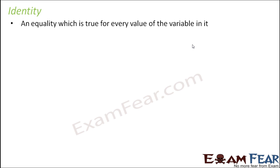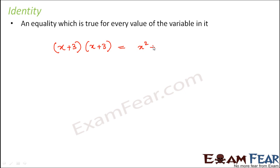Now what is an identity? An identity is also an equality which is true for every value of the variable in it. The equation we just saw was true only for x equal to 3, but an identity is the type of equality which is true for every value of the variable. Let us take an example: x plus 3 into x plus 3 is equal to x squared plus 6x plus 9. This is an equation — you have an algebraic expression on the left hand side, an algebraic expression on the right hand side, and an equality sign in between.